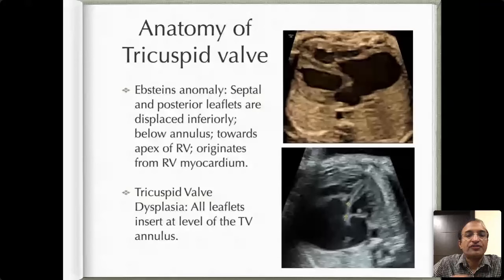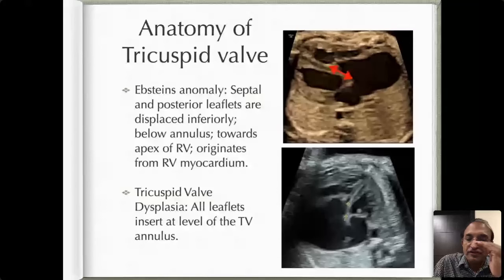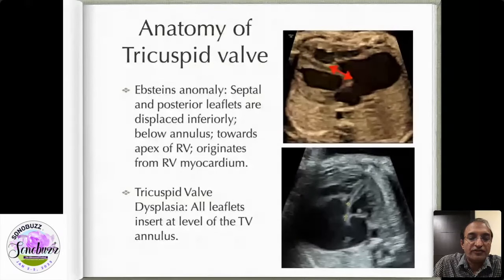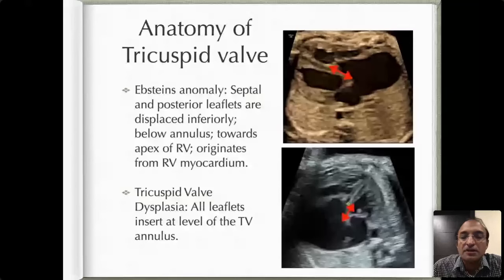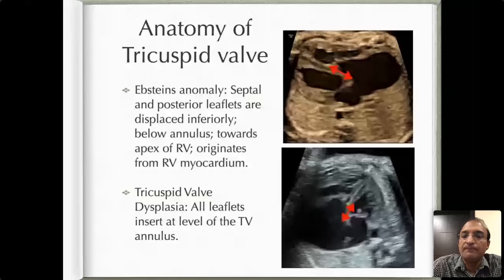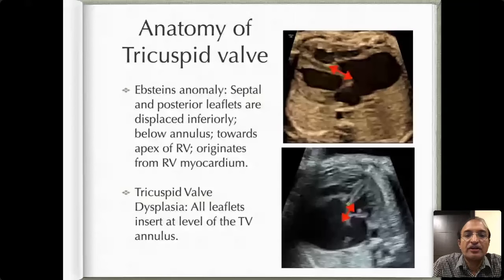When you look at the anatomy of the tricuspid valve, there is a downward displacement of the septal leaflet of the tricuspid valve — this is the hallmark of Ebstein's anomaly. However, in tricuspid valve dysplasia all the leaflets insert at the same normal level, so the downward displacement doesn't happen. When Ebstein's becomes more and more severe, the displacement also becomes more and more, resulting in a very specific entity I will show in a couple of slides. That is the first difference between a dysplastic tricuspid valve and Ebstein's.